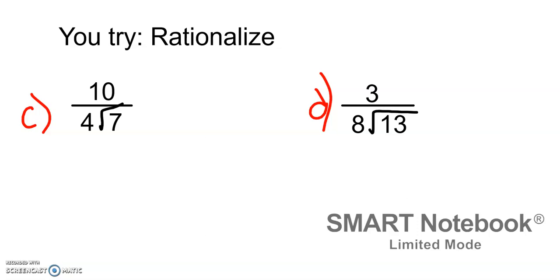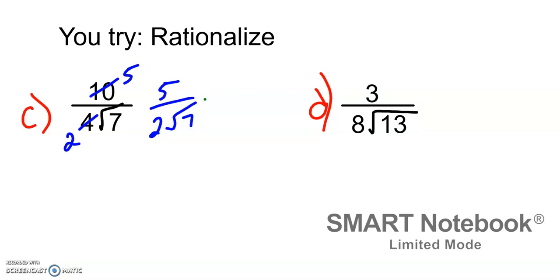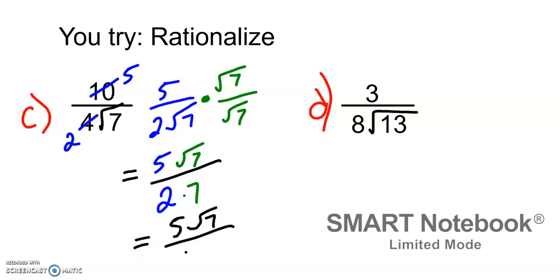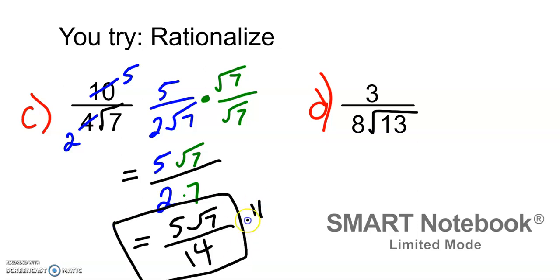If you're listening, you've attempted examples C and D. For example C, I have 10 over 4 root 7. I can simplify 10 over 4 by 2, giving 5 over 2 root 7. To rationalize, I multiply by radical 7. That gives 5 root 7 over 2 times 7, because square root of 7 times square root of 7 equals whole 7. So we simplify to 5 root 7 over 14. Notice we have an integer as our denominator — we have rationalized.